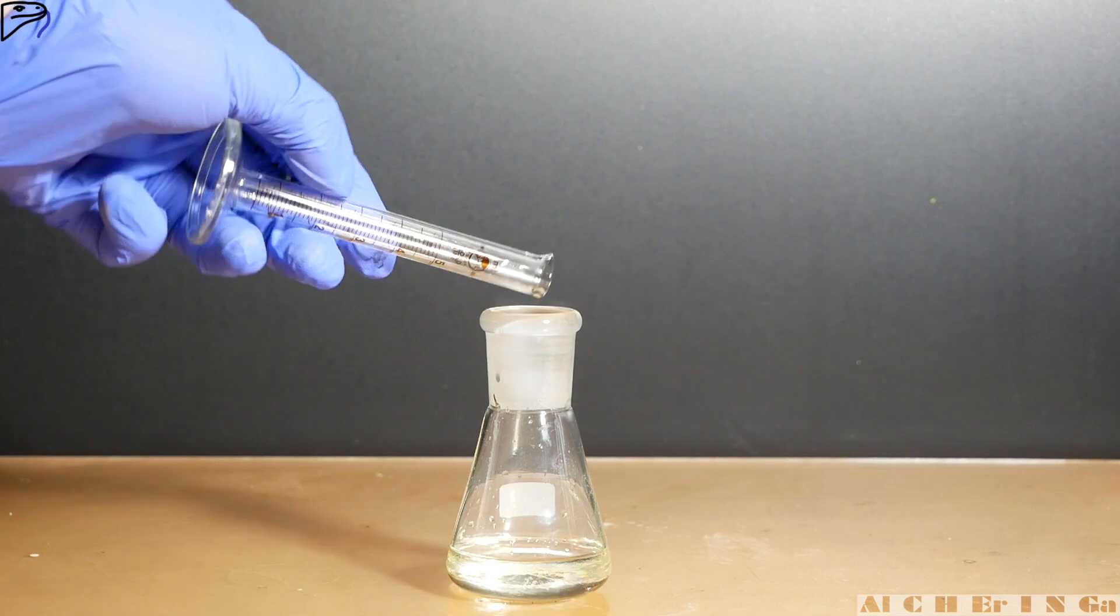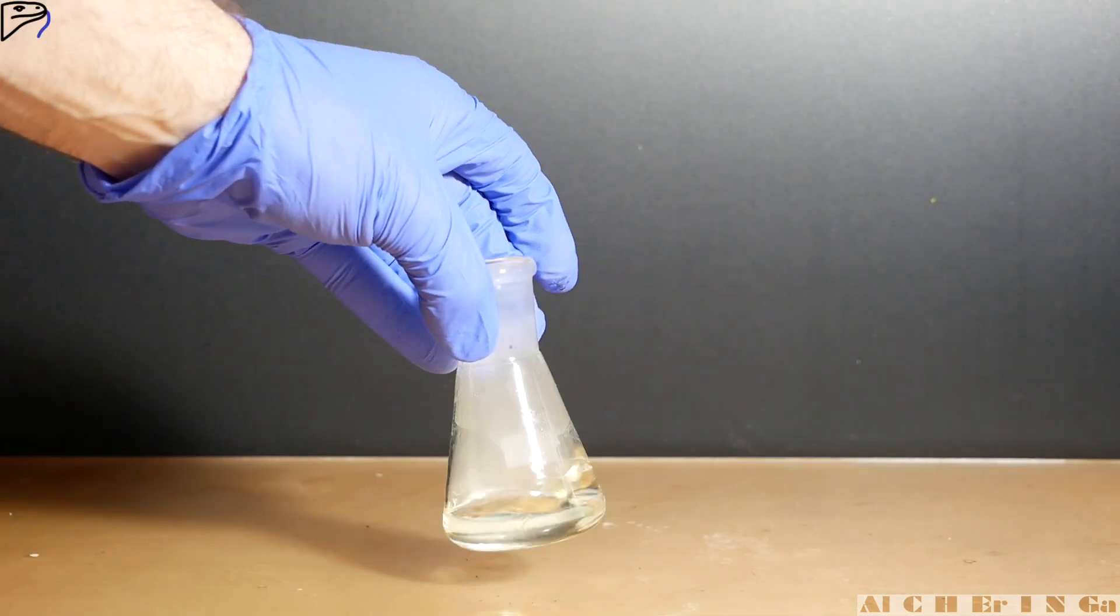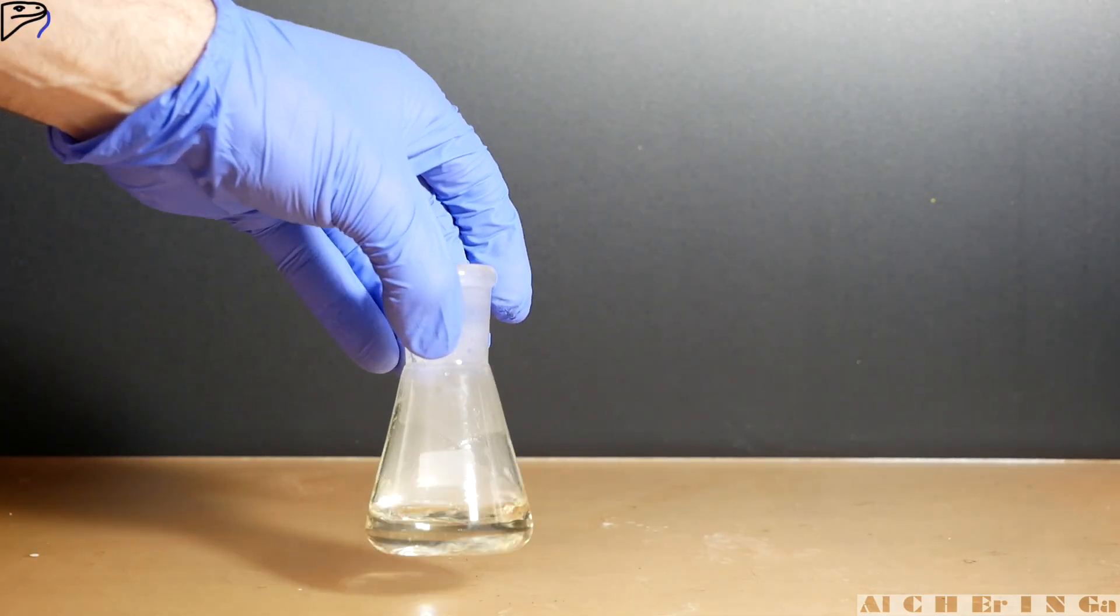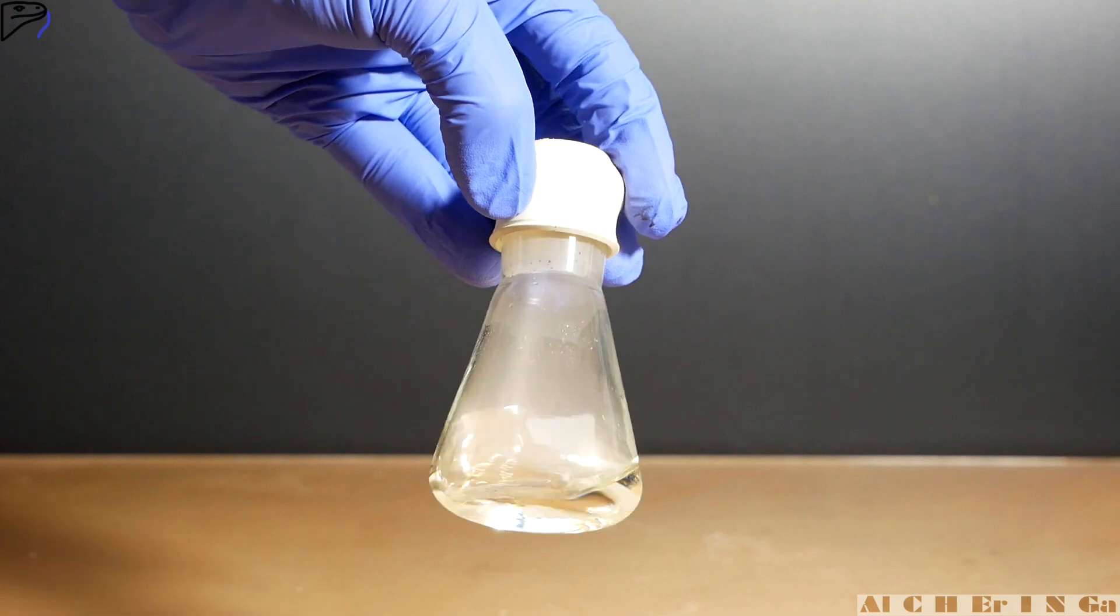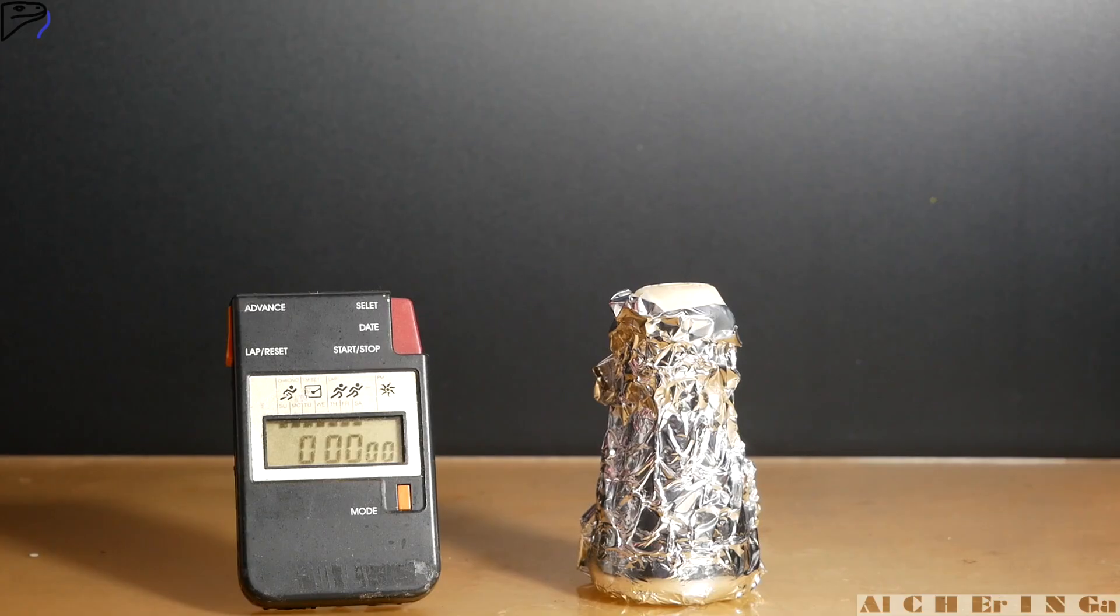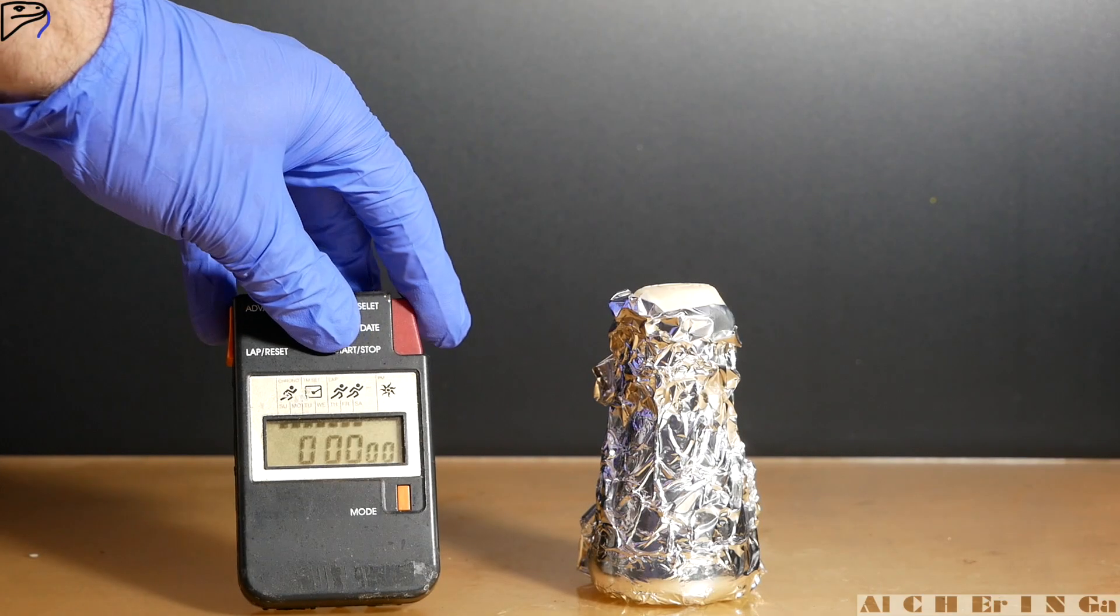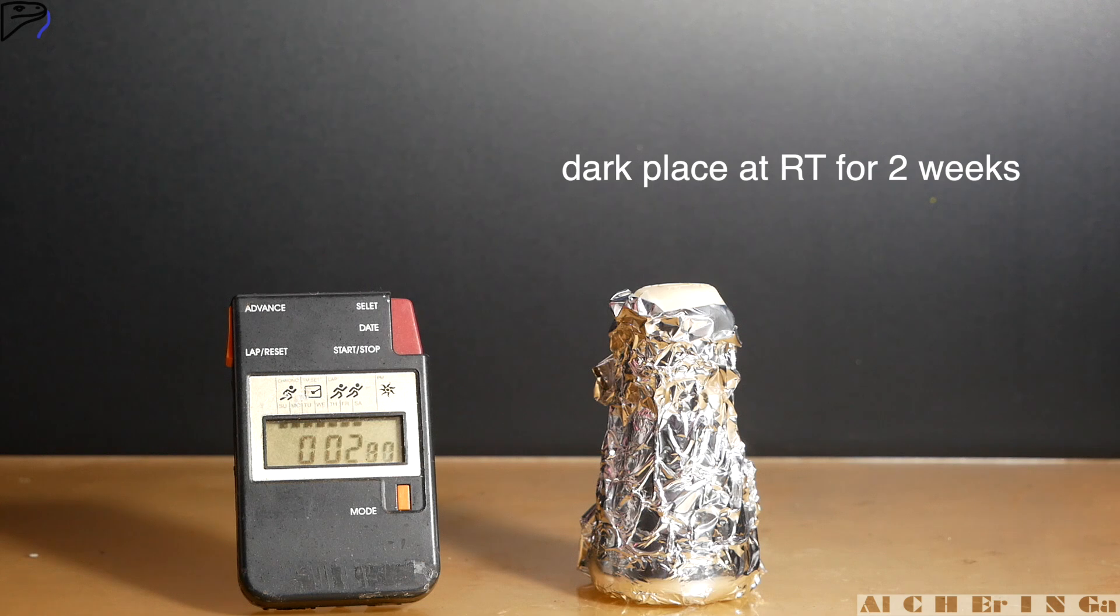The mixture will start to produce white fumes. Swirl the mixture for a few seconds. After that, stopper the flask and wrap aluminum foil around the flask. Place the flask in a dark place at room temperature for two weeks.